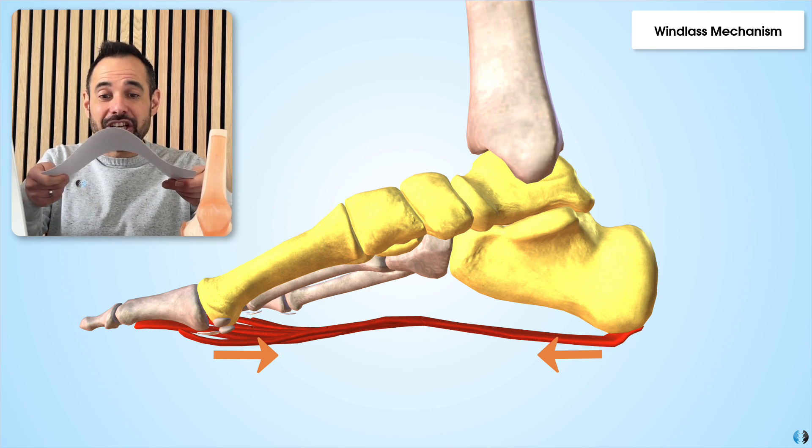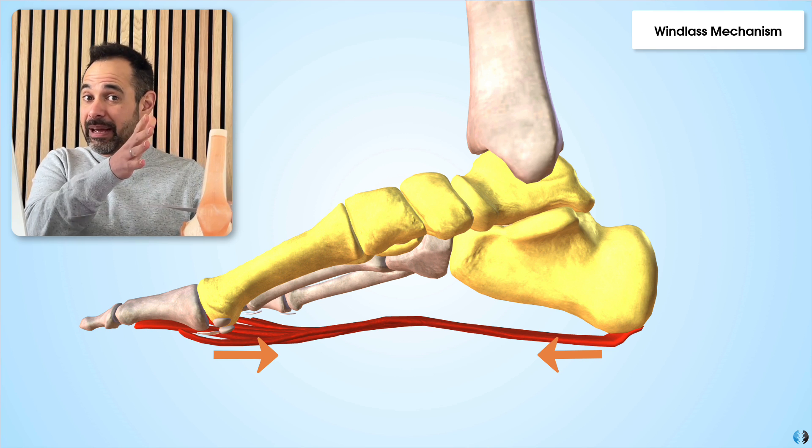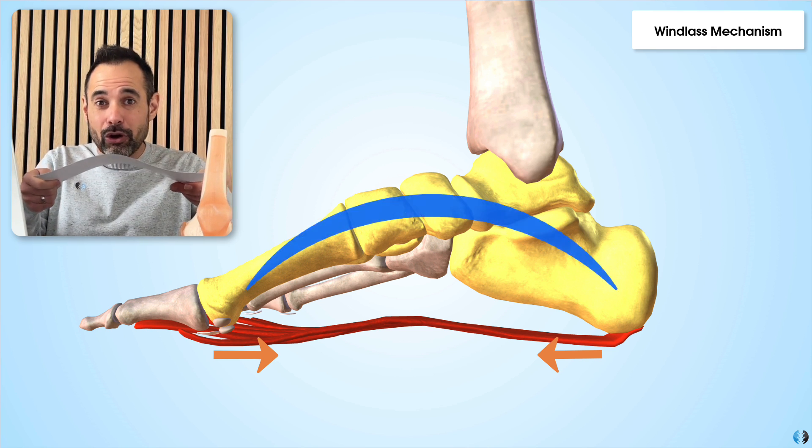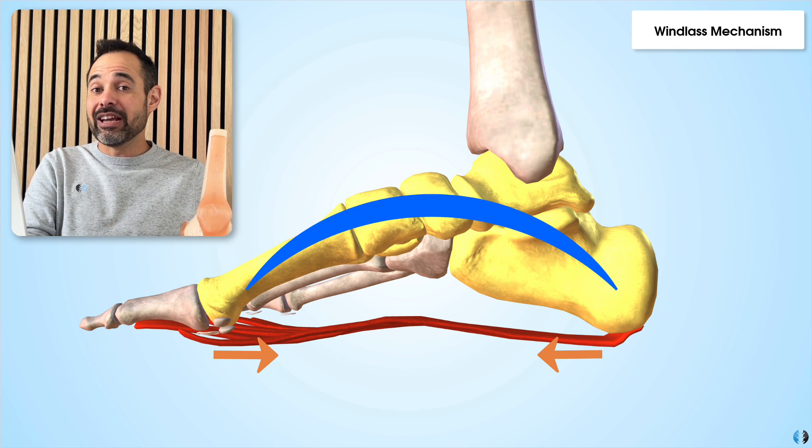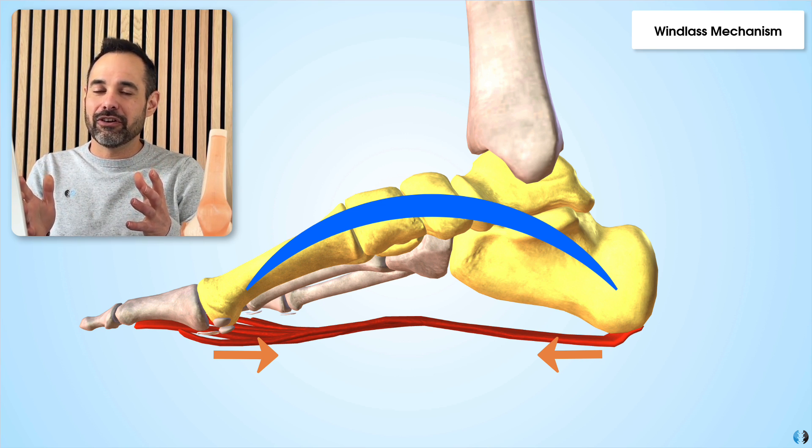And therefore, as you can imagine, when we get that shortening between the calcaneus and the metatarsophalangeal heads, it pushes a little bit of force upwards in order to maintain that bridge of the medial longitudinal arch of the foot. And that's how the windlass mechanism allows the plantar fascia to do so.